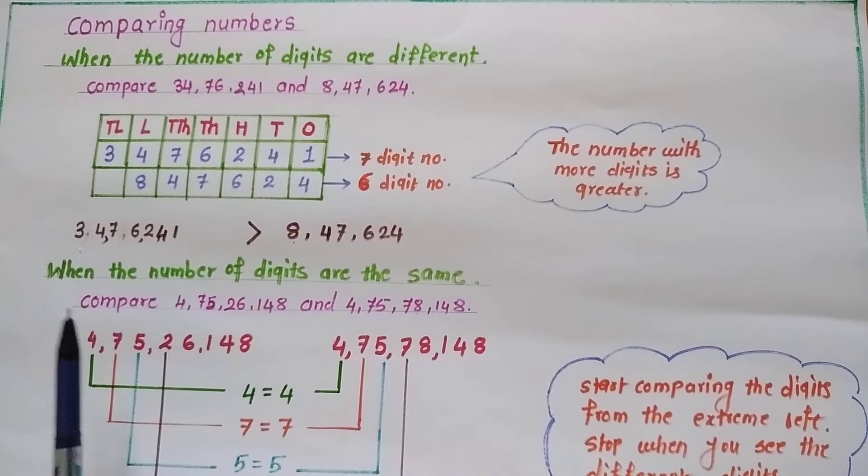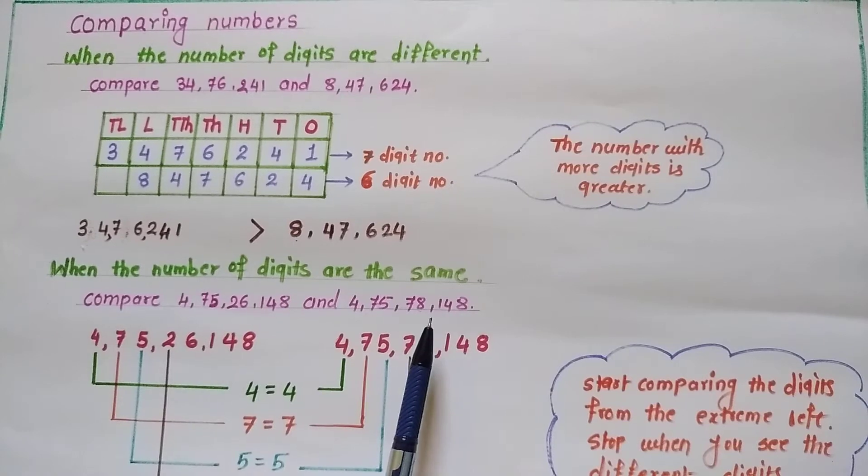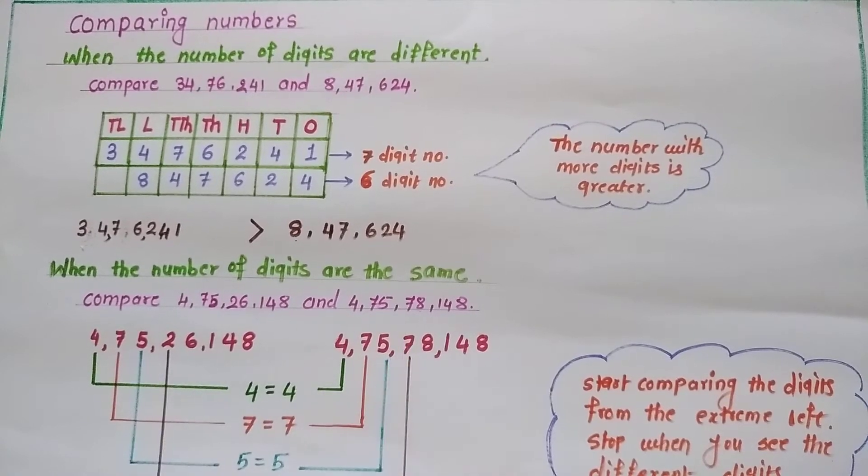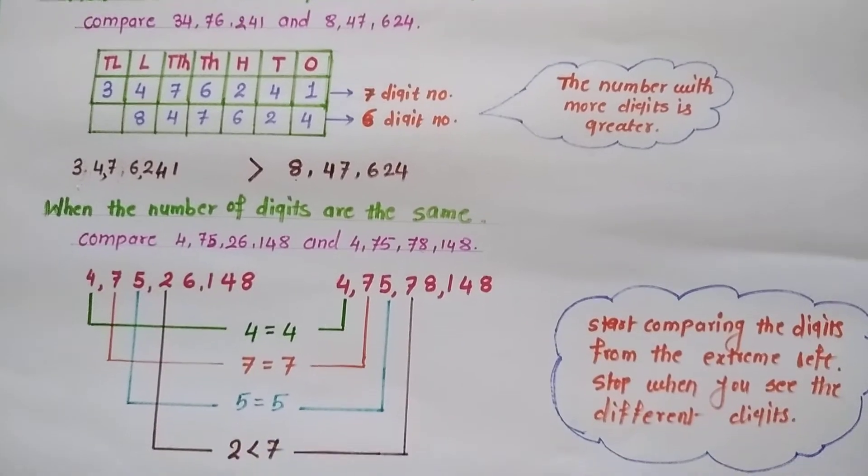Now, come to the second case when the number of digits are same. Here, I have taken two numbers and in both the numbers, the number of digits are same. That is, each number carries 8 digits.